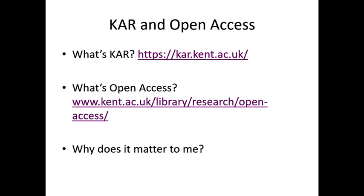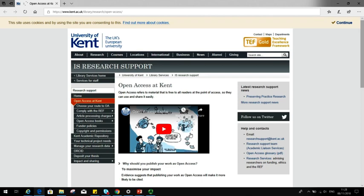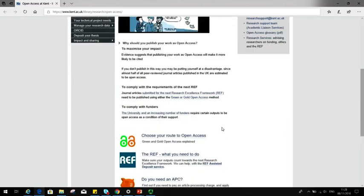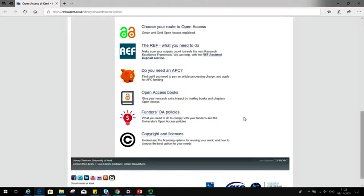So within CAR, there are two types of information. There's bibliographic information about the publications and outputs produced by the University of Kent staff and students, but there's also the full text of articles, book chapters, conference presentations, and files of research outputs. There's a PhD comic video on this page that provides a really good explanation of what open access is all about and why it matters. Also on this web page is other information about the different routes to open access, what funders require, etc., which may be a bit detailed for you right now, but it's worth knowing about.